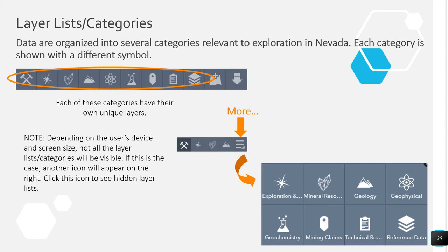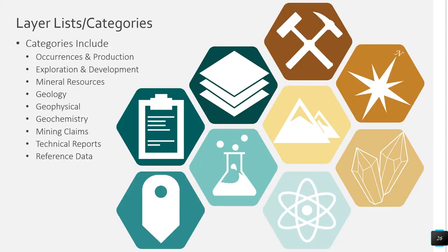Depending on the user's device and screen size, not all of these categories will be visible in the application. If this is the case, another icon will appear on the right — click on it to see hidden layer lists. Categories include occurrences and production, exploration and development, mineral resources, geology, geophysical, geochemistry, mining claims, technical reports, and reference data. The source of the layer is indicated in parentheses next to the layer name.